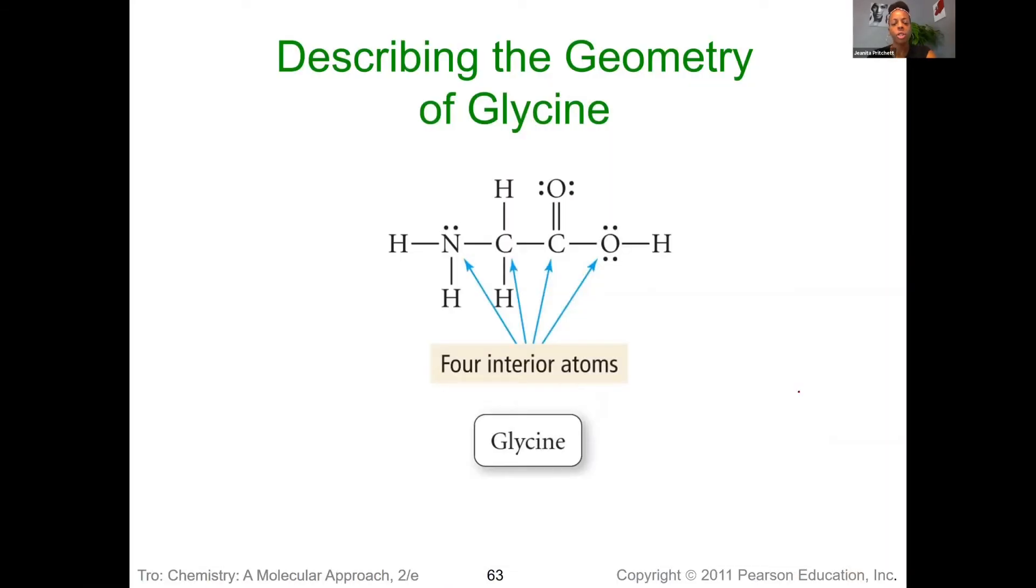Again, if we describe the geometries here for glycine, we have four interior atoms. So for here, we would say that the electron geometry should be, well I see one lone pair, three bonding regions should be tetrahedral. The molecular geometry will be different because there's that lone pair. It will be trigonal, not planar, but pyramidal, because of that pyramid shape.